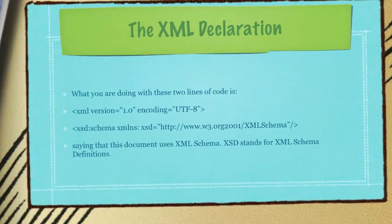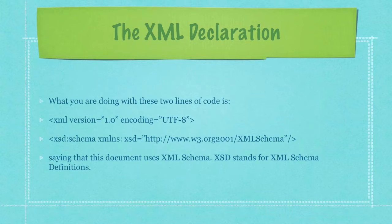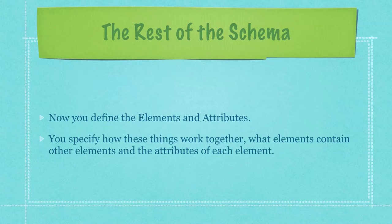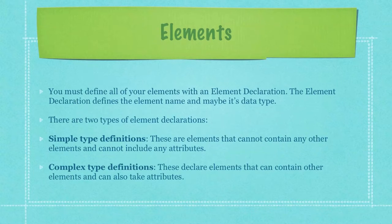What you're doing with these two lines of code is saying that this document uses XML schema. XSD, by the way, stands for XML Schema Definition. In the rest of the schema, you define the elements and attributes — you specify how these things work together, what elements contain other elements, and the attributes of each element.